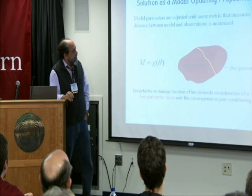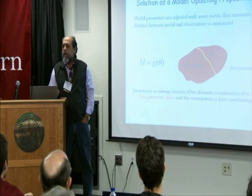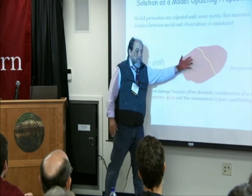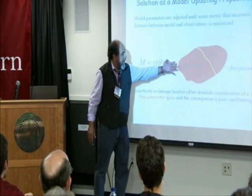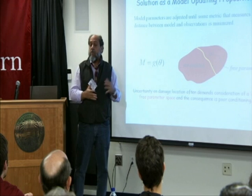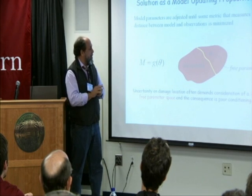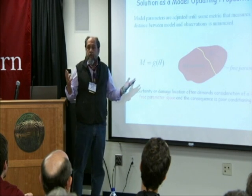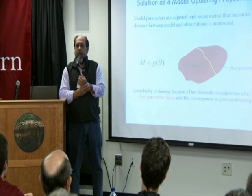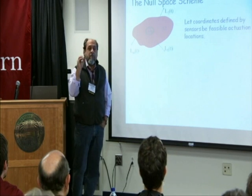At first glance you might say this might be solvable within a model-updating proposition — make a model of the part, assume there is some stuff you don't know, tweak it until the response of the model is in harmony with the data, and then call it done. Say these are the parameters — maybe it tells you where the crack is. The problem is that if you work on this, you already know it's naive: there are so many parameters that the problem is very ill-posed. There are a gazillion ways to tweak it that almost match the data, and therefore you don't really get any information.